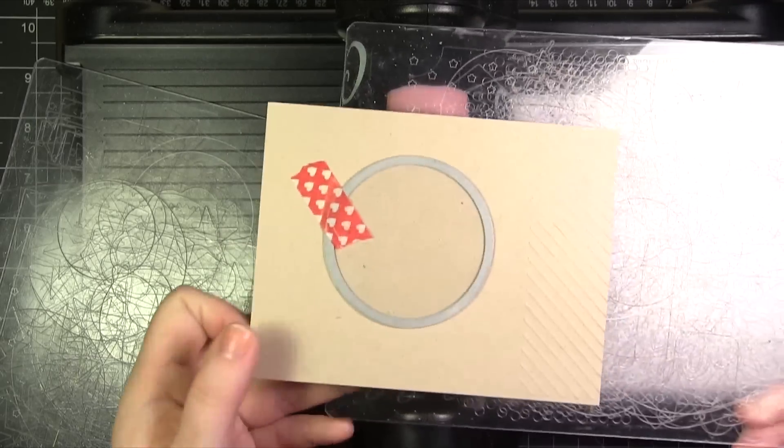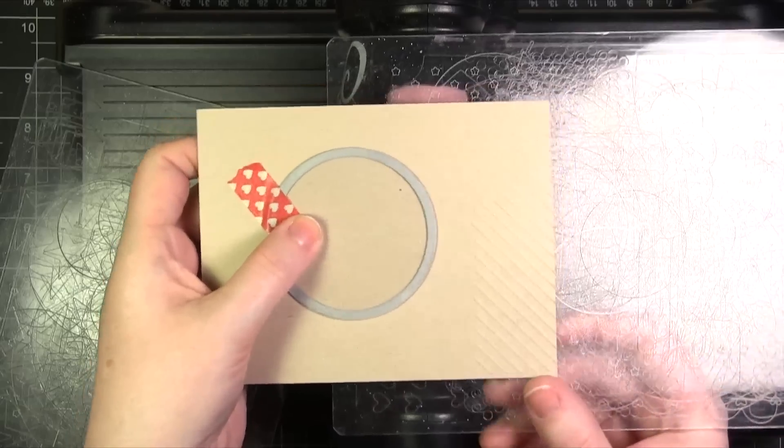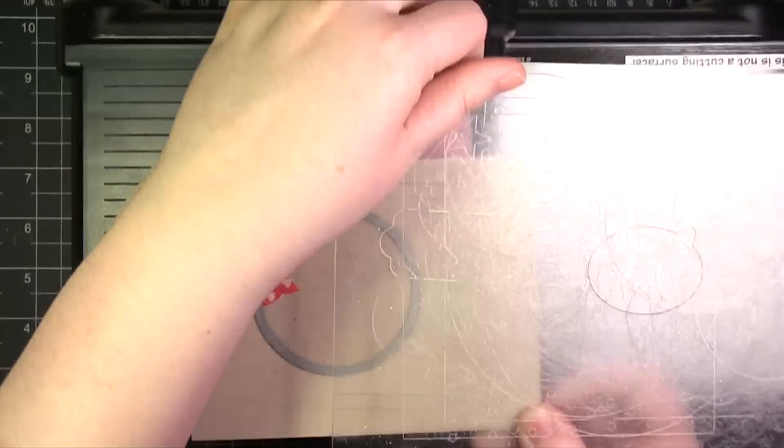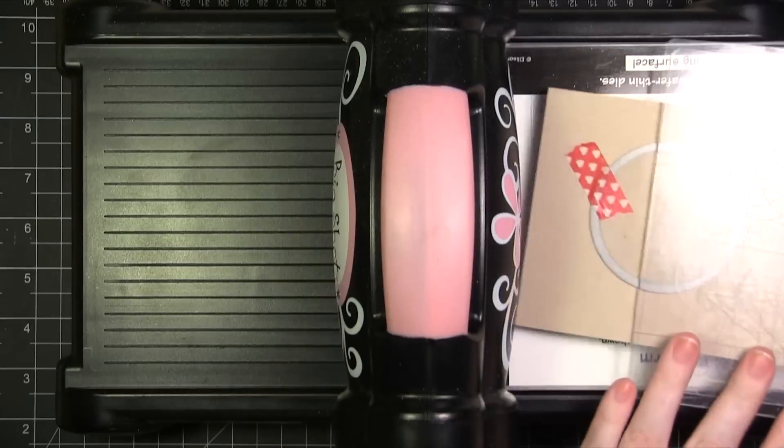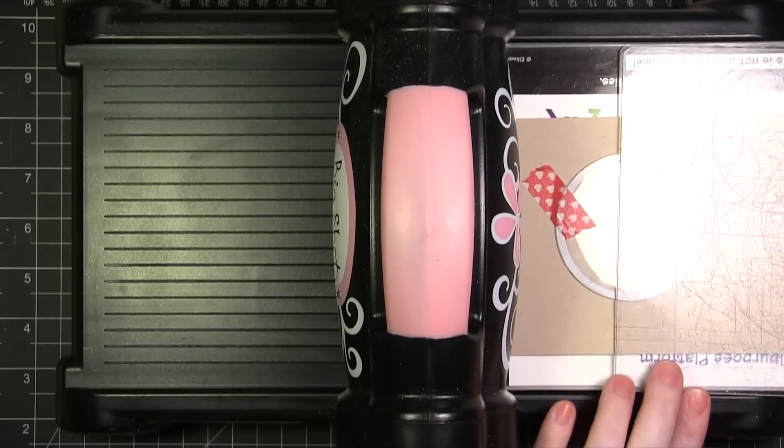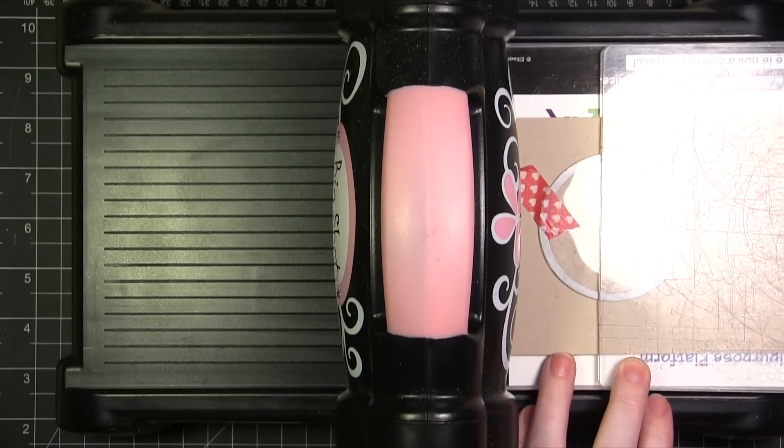Now when I put my cutting pads together to create my sandwich, I'm going to have the project or the die sticking out the side. Wherever there's not enough pressure, like wherever it's sticking out, it will not cut.